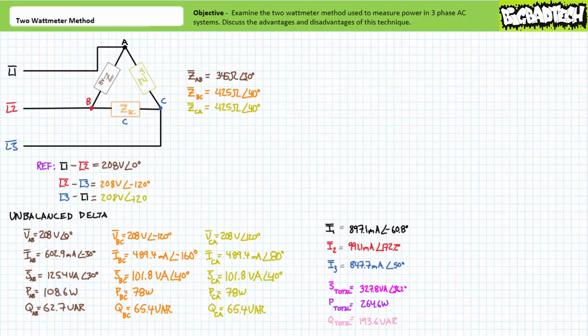The larger point for this lecture is this: you already know how to calculate and measure power in three-phase AC systems. AC power consists of real and reactive components, and these different dimensions of power can be calculated for an individual element using any of the numerous methods at our disposal. Power for an individual load is the complex conjugate of load voltage times load current; also the complex conjugate of load voltage squared divided by impedance; and finally, the complex conjugate of load current squared times impedance. Total apparent, total real, and total reactive power for a three-phase AC system is simply the summation of individual apparent, real, and reactive power figures, whether the load is balanced or unbalanced, Y or delta. Total power is simply the summation of individual powers.